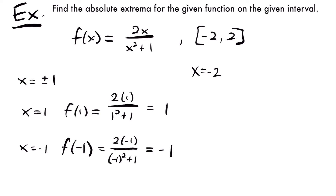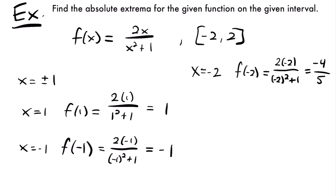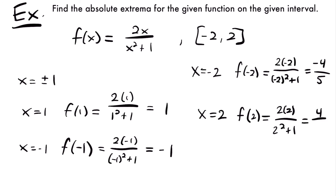Now let's check our endpoints. Starting with x equals negative 2, f of negative 2 equals 2 times negative 2 divided by negative 2 squared plus 1, which is negative 4 over 5, giving us negative 4 fifths. For x equals positive 2, f of 2 equals 2 times 2 divided by 2 squared plus 1, which is 4 over 5, giving us 4 fifths.